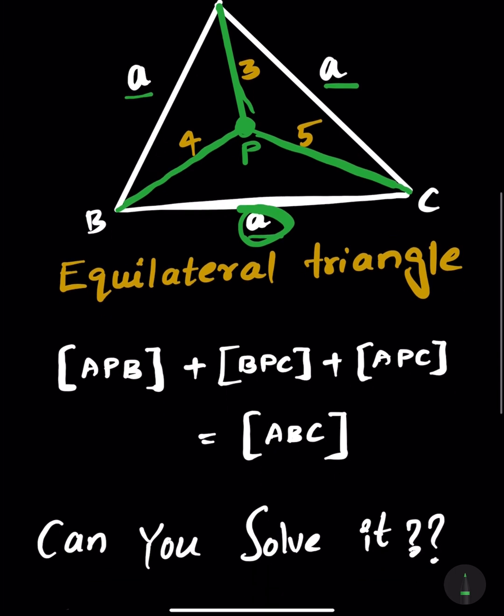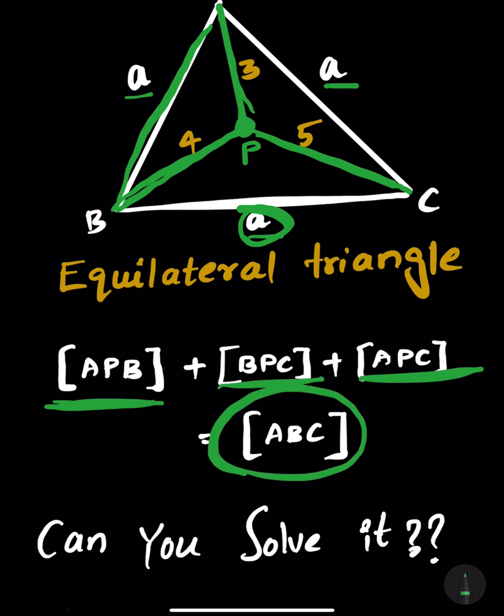When you look at this problem, when you encounter it for the first time, the idea that comes to mind, to anyone's mind, is to find the area of triangle APB using Heron's formula since we know all the three sides, and BPC, APC, and then sum them up and equate it to the area of triangle ABC.